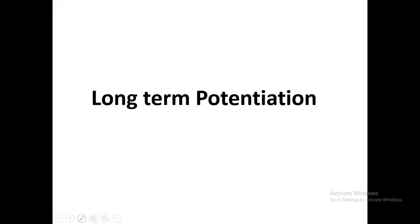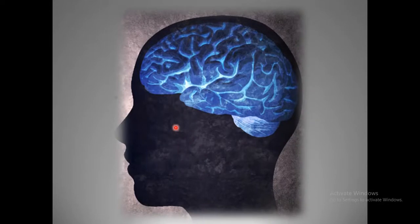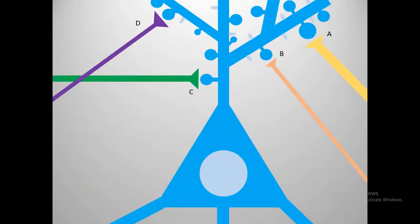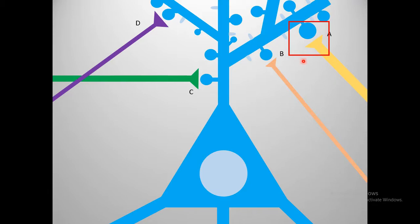Today I will talk about long-term potentiation in detail. One significant feature of our brain is its ability to change throughout its lifetime depending upon experiences. Our brain is composed of billions of neurons connected to each other by junctions called synapses. Depending upon learning, memory-related tasks, or when we gain experiences, the strength of the synapses can change — it could increase or decrease. This alteration of synaptic strength is known as synaptic plasticity.